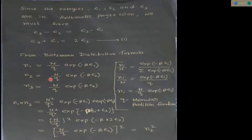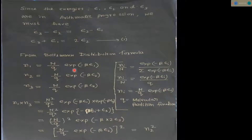From the Boltzmann distribution formula, n1 equals N upon q times exponential minus beta epsilon 1. Similarly, n2 equals N upon q times exponential minus beta epsilon 2. And n3 equals N upon q times exponential minus beta epsilon 3. The total number of molecules N and partition function q remain the same; only the energy level changes.